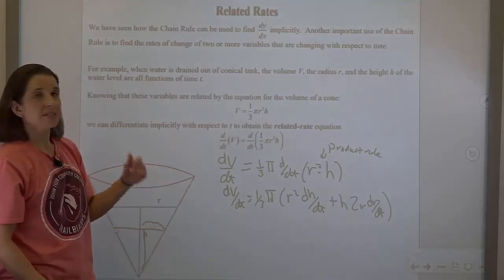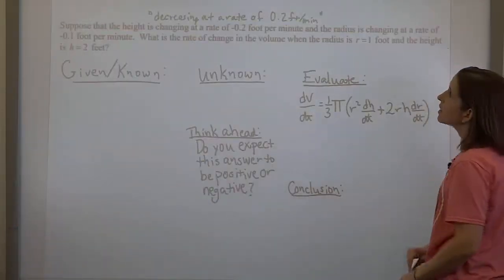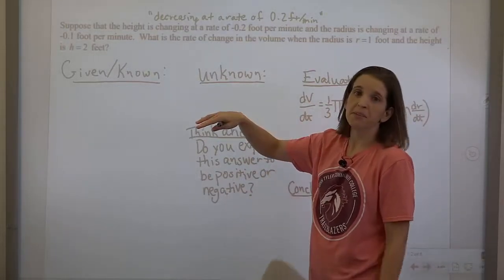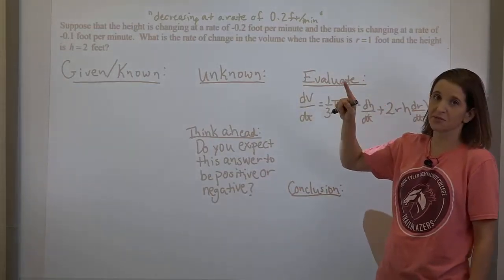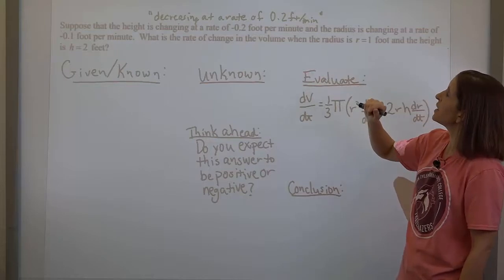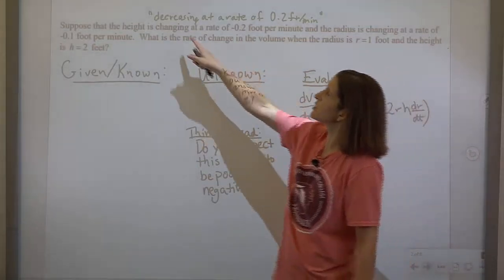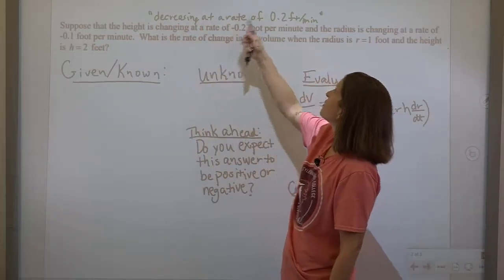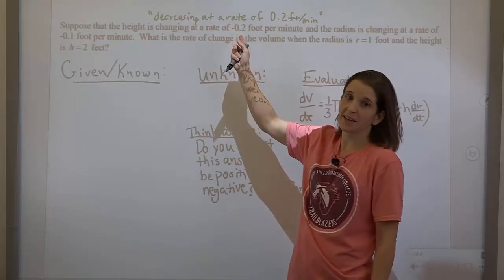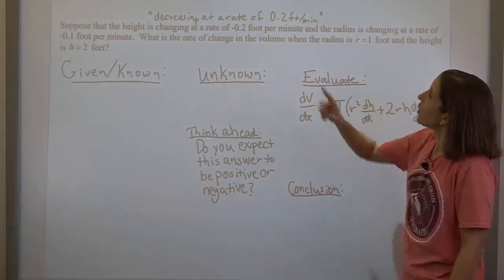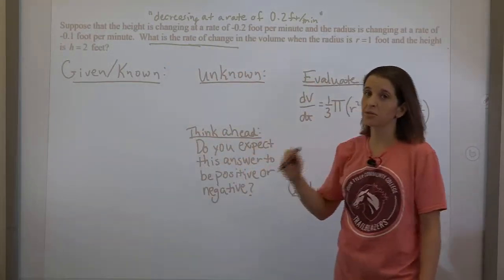For a problem using this formula, suppose that the height is changing at a rate of — that's a derivative word — negative 0.2 feet per minute, and the radius is changing at a rate of negative 0.1 feet per minute. These could have been worded 'decreasing at a rate of 0.2 feet per minute,' and the word decreasing would indicate the negative sign. So we need to be careful about that.